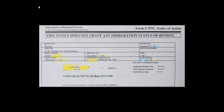Now let's talk about and explain this form. As you can see, the first field is notice type, which is a receipt. The case type is I-130, Petition for Alien Relative. The notice date is from 2021 or 2022. The receipt number is what you use to check your case status, and the priority date is the date the petitioner officially filed this petition for you. The preference classification tells you who filed the petition — a green card holder or a US citizen. In this case, it is a US citizen.